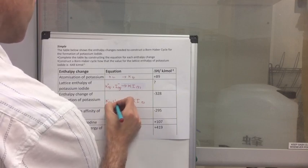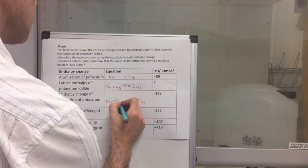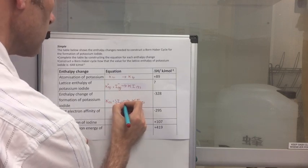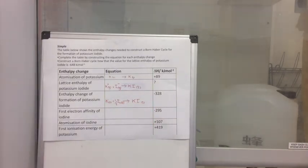Potassium solid and half a mole of iodine, which is I2. And iodine is actually a solid under standard conditions. So it would have been a bit nasty with that.